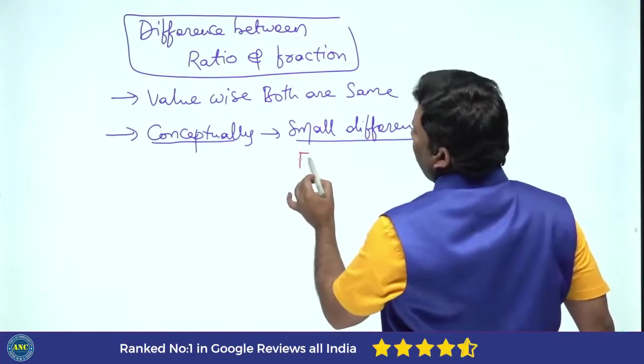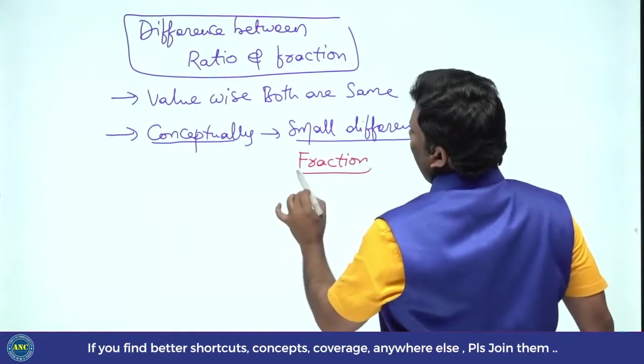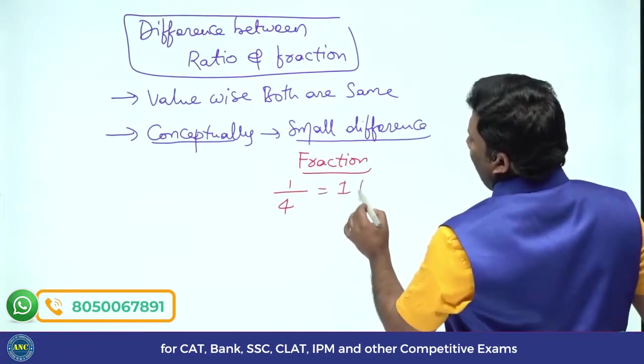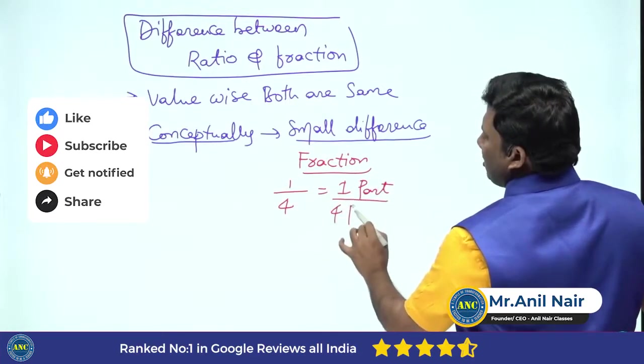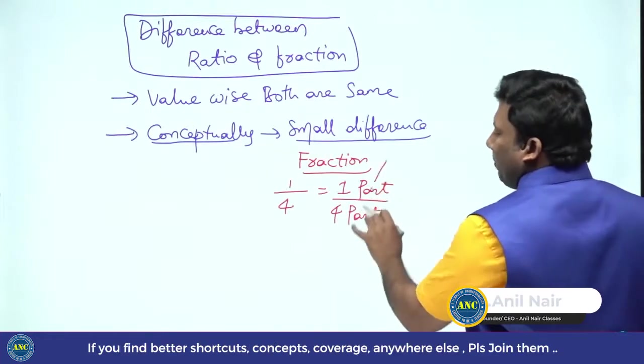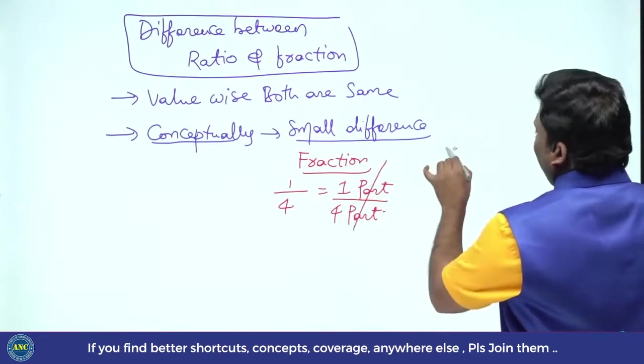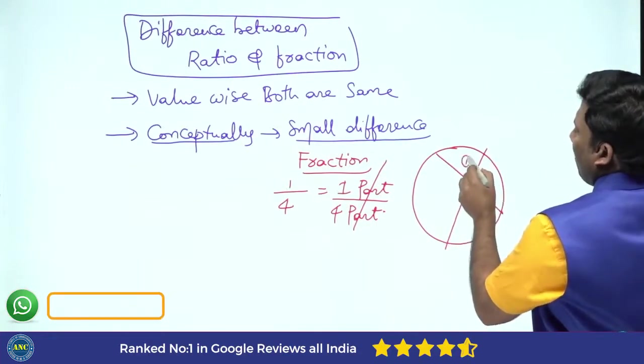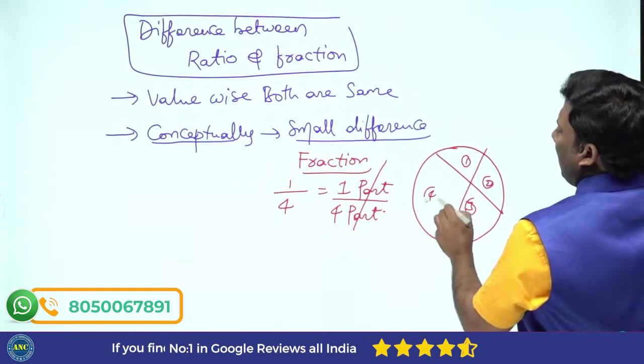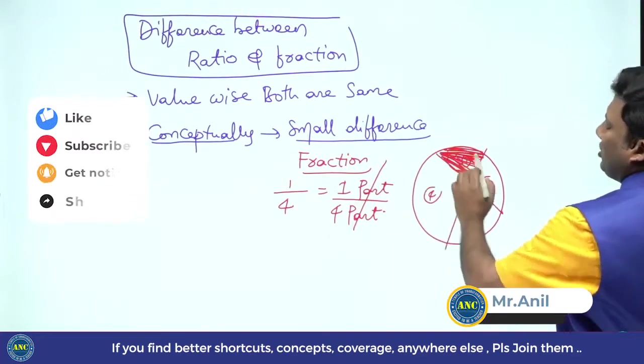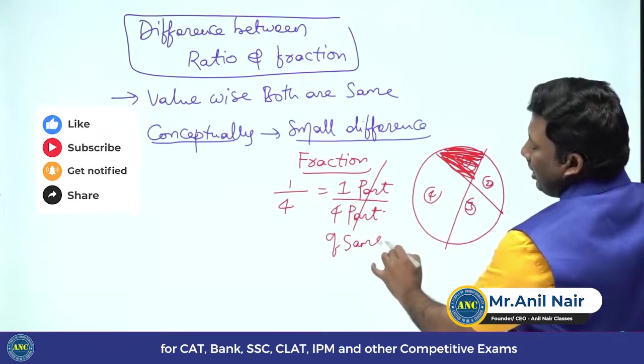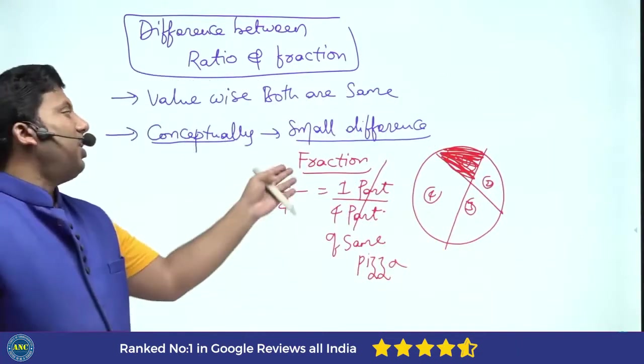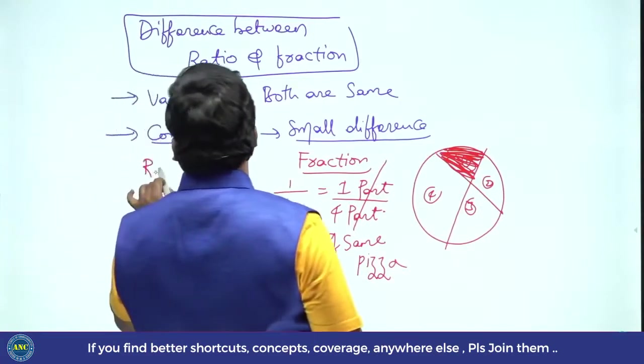If I say fraction, if I say 1/4, the meaning of 1/4 is I am taking one part out of four parts. There is a pizza. Pizza is divided into first part, second part, third part, fourth part. I am taking one part out of four parts. One part out of four parts of the same pizza. It is called fraction.